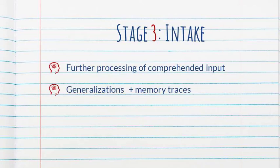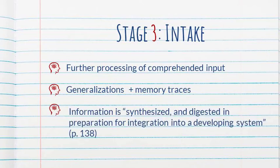Now, the author says that it is, for example, where generalizations are likely to occur, where memory traces are formed, and where information is synthesized and digested in preparation for integration into a developing system.